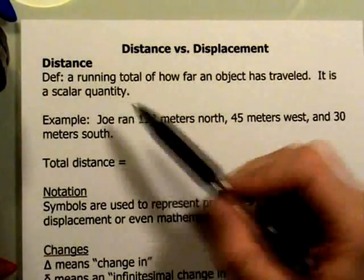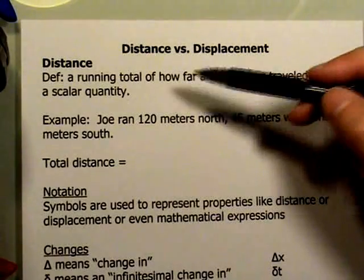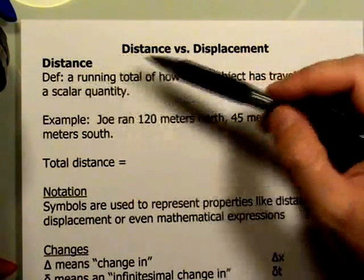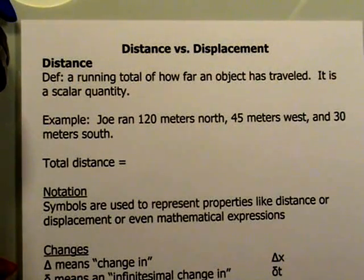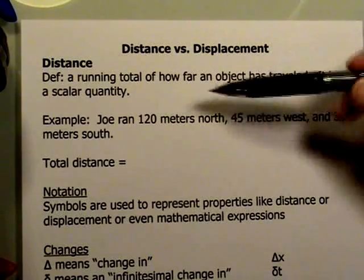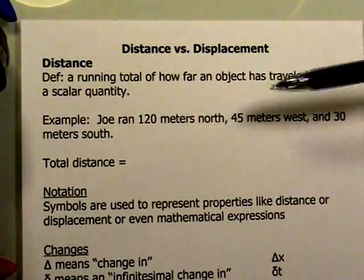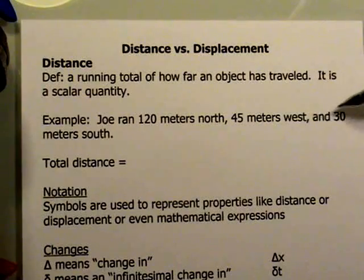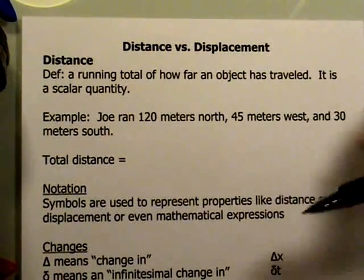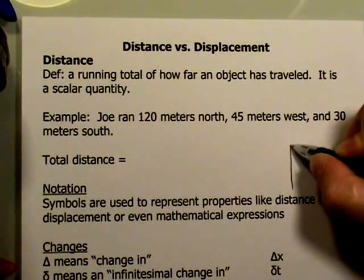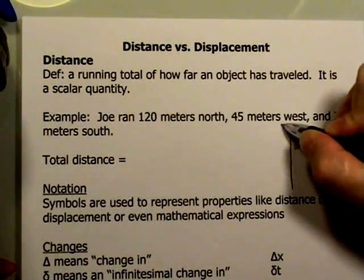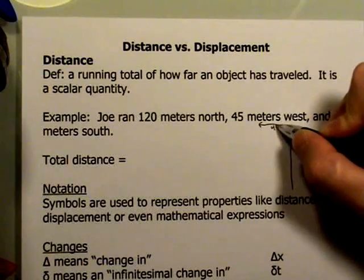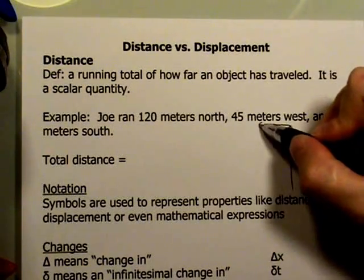Typically, the symbol for distance is S. It's a little strange that distance and displacement — you might think D would be the letter to represent those — but actually we tend to use different letters. For example, if Joe ran 120 meters north, 45 meters west, and 30 meters south, that would be a path that looked something like this: 120 meters to the north, 45 meters to the west, and then 30 to the south.